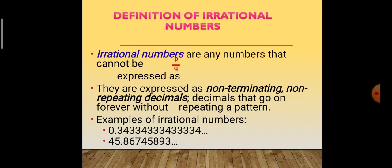Examples of irrational numbers: 0.343343343... (a non-repeating, non-terminating decimal pattern), and 45.86745893... These numbers are not in the form of P by Q.